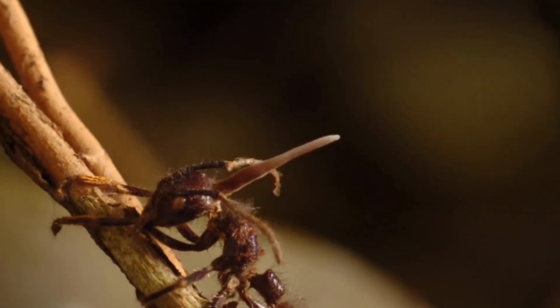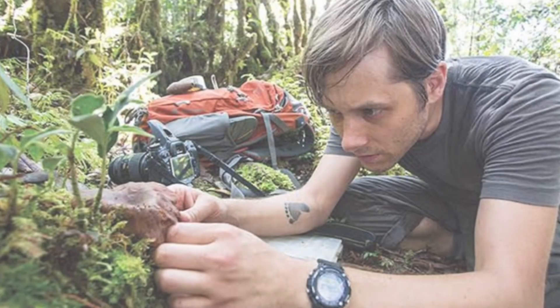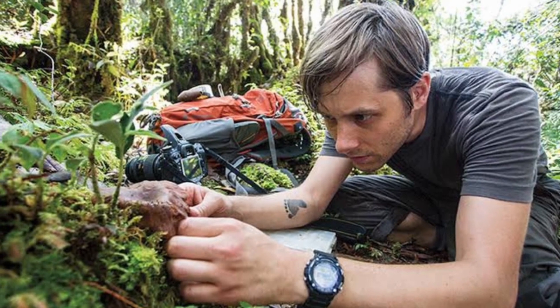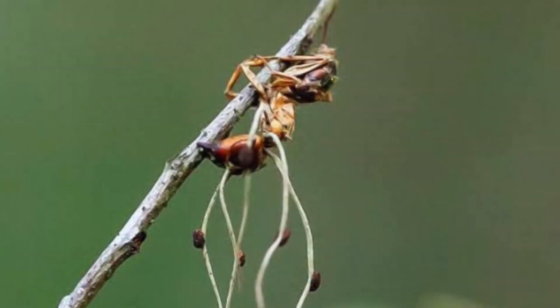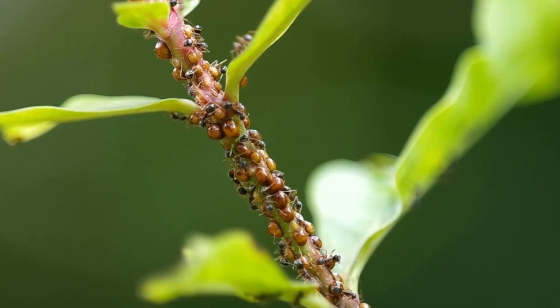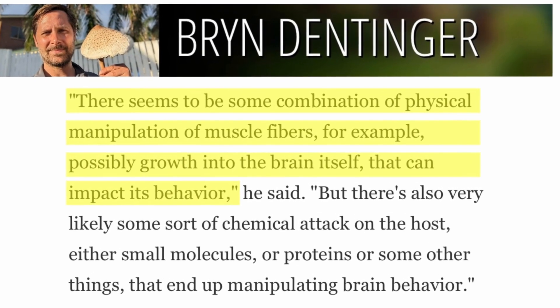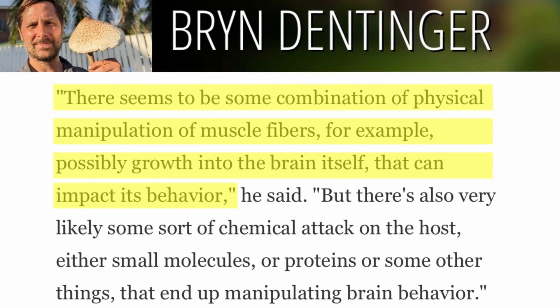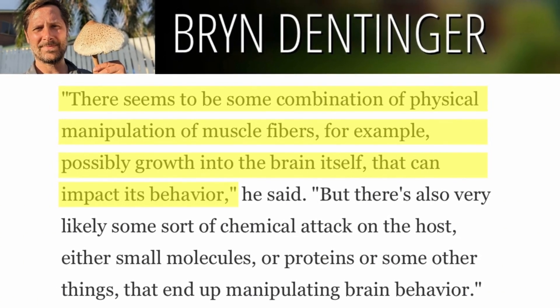The fungus is one of the best known and possibly most commonly observed creature types with this capacity, according to Brian Denninger, curator of mycology at the Natural History Museum of Utah and biology professor at Utah University. He continued by saying that although there are some possibilities, it's not quite clear how a particular fungus could have the effect it does on insects. He stated that there seems to be some combination of physical manipulation of the muscle fibers and possibly growth into the brain itself that can impact its behavior.